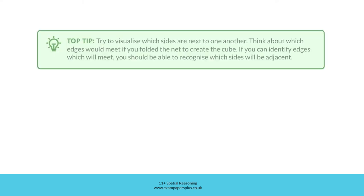Top tip: Try to visualise which sides are next to one another. Think about which edges would meet if you folded the net to create the cube. If you can identify edges which will meet, you should be able to recognise which sides will be adjacent.